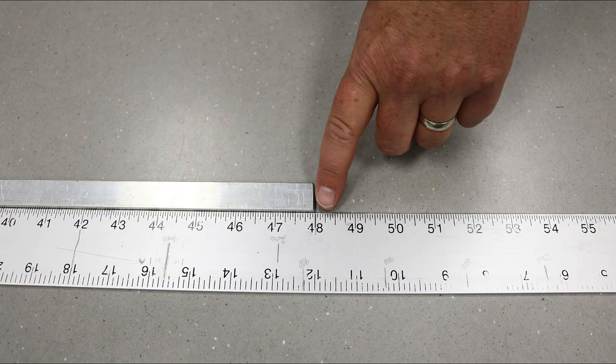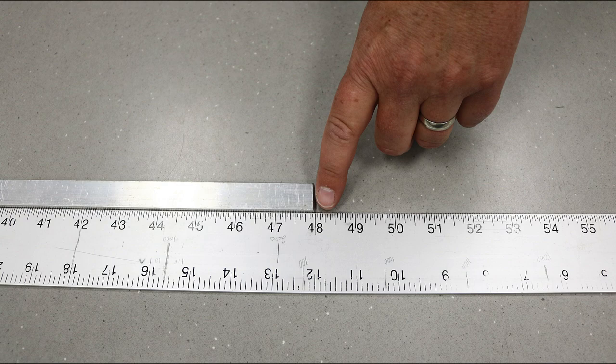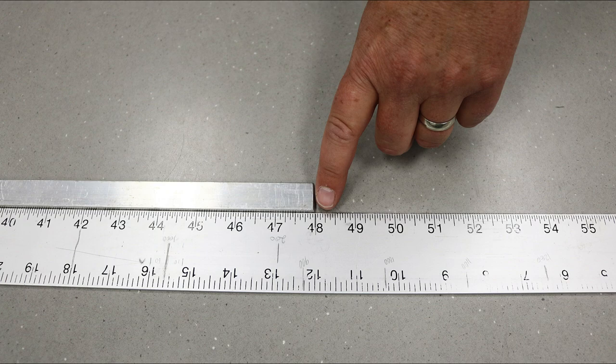Measure the full length of the column using the 1500 mm aluminum straight edge provided. This measurement should be recorded to within 0.5 mm, and you will record this in Table 1.